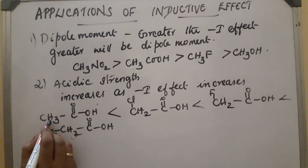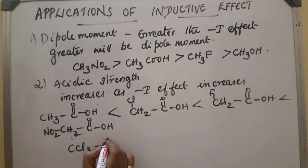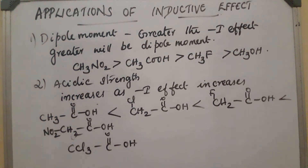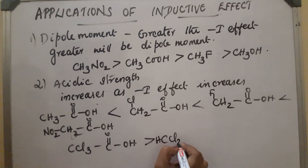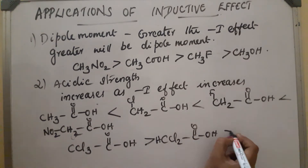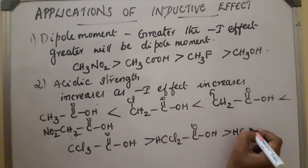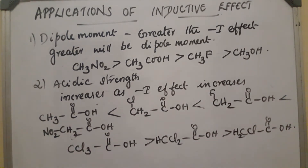If all hydrogens are replaced by Cl — giving CCl3COOH — it has more minus-I effect than CHCl2COOH (two Cl groups), which in turn is more acidic than CH2ClCOOH. The order: CCl3COOH > CHCl2COOH > CH2ClCOOH > CH3COOH.